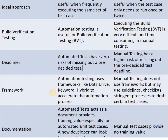Next parameter is framework. Automation testing uses frameworks like data-driven, keyword, and hybrid to accelerate the automation process. Manual testing does not use frameworks but may use guidelines, checklists, and certain processes to draft test cases.